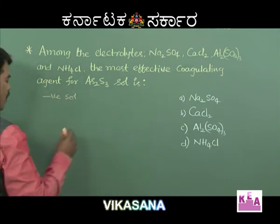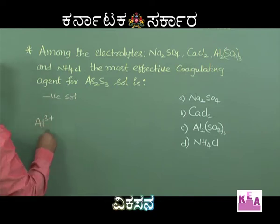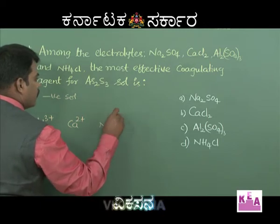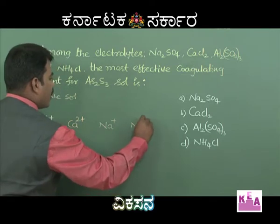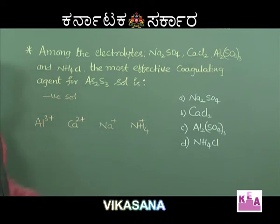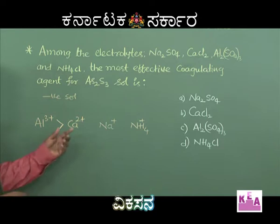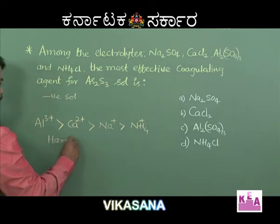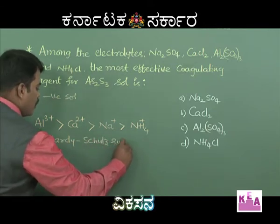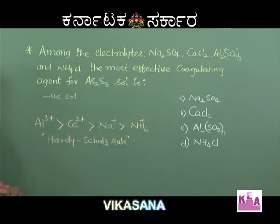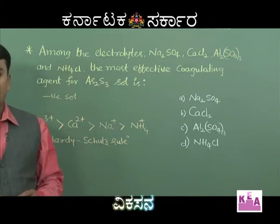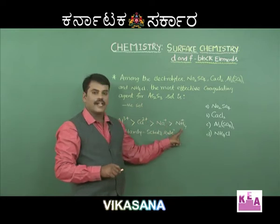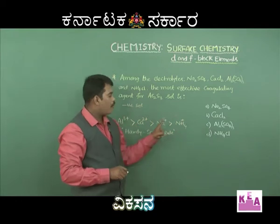The cations contributed by these electrolytes are: Al³⁺ from aluminium sulphate, Ca²⁺ from calcium chloride, Na⁺ from sodium sulphate, and NH₄⁺ from ammonium chloride. Among these, aluminium ions are the most capable of coagulation compared to Ca²⁺, Na⁺, and NH₄⁺. This is in accordance with the Hardy-Schulze rule, which states that the coagulation capacity of an electrolyte is directly proportional to the charge magnitude on the active ion. Al³⁺ has the highest charge magnitude, making it the most effective.